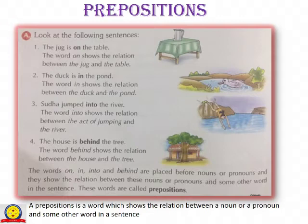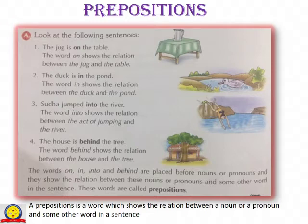Next: The house is behind the tree. The word 'behind' shows the relation between the house and the tree. So here the words 'on', 'in', 'into', and 'behind' are placed before nouns or pronouns, and they show the relation between these nouns or pronouns and some other word in the sentence. These words are called prepositions.